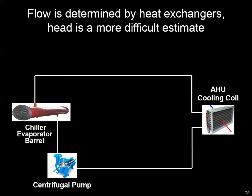Flow is a little bit more straightforward, and that's going to be determined by your heat exchange devices. By design, the chiller evaporator barrel is going to have some target flow to accomplish the heat exchange it needs to have. And same thing with the load side or the coil side.